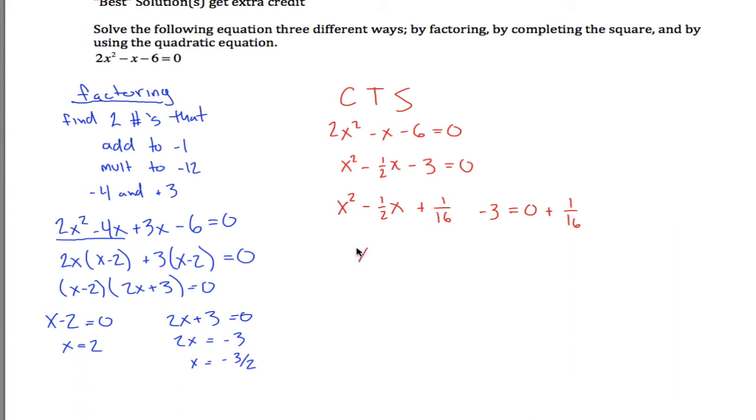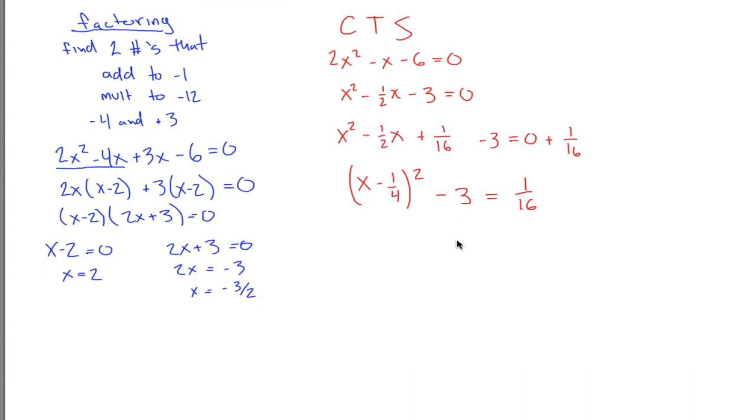Now I've completed the square and need to solve for x. First, add 3 to both sides to get rid of the -3. To add 3 + 1/16, we need a common denominator. 3 = 48/16, so instead of 3 + 1/16, I write 48/16 + 1/16 = 49/16.